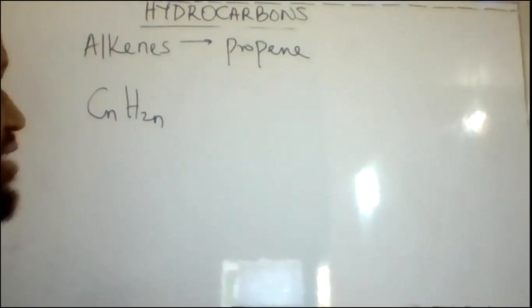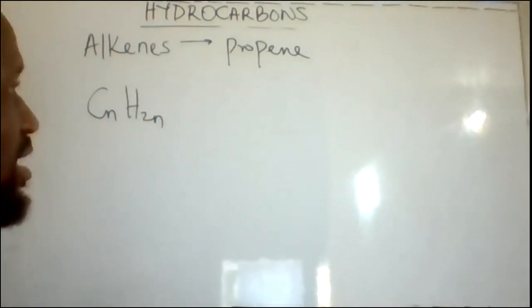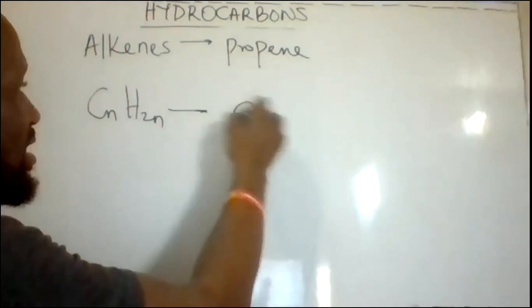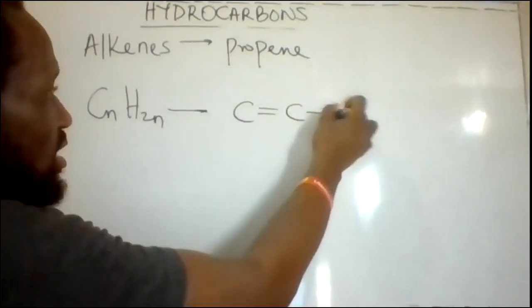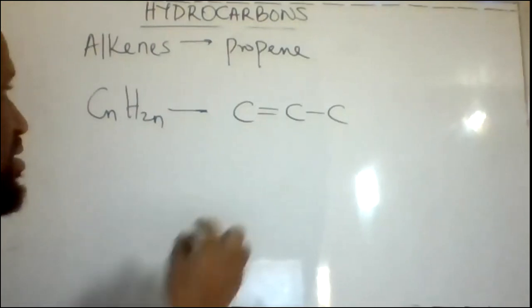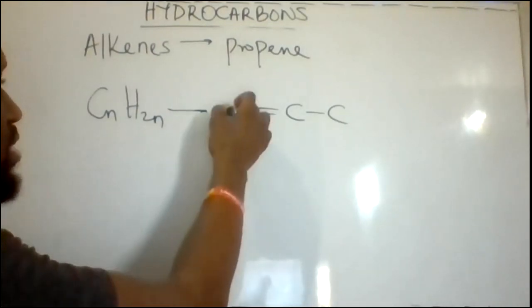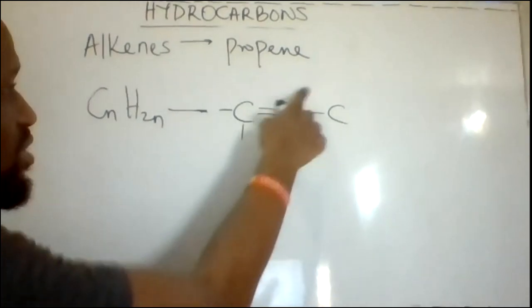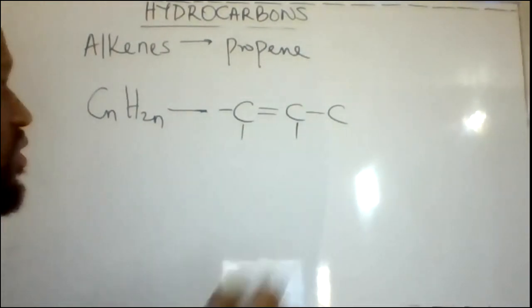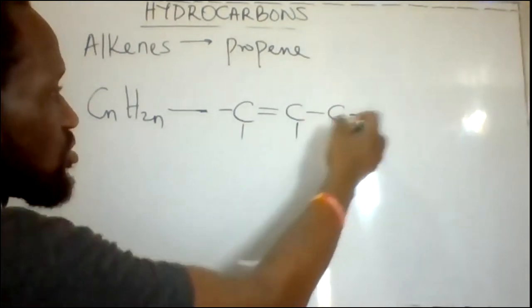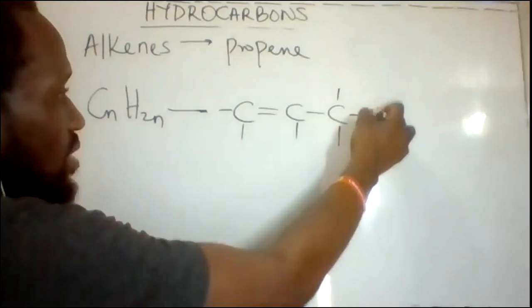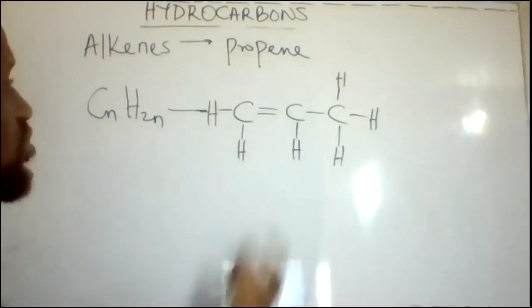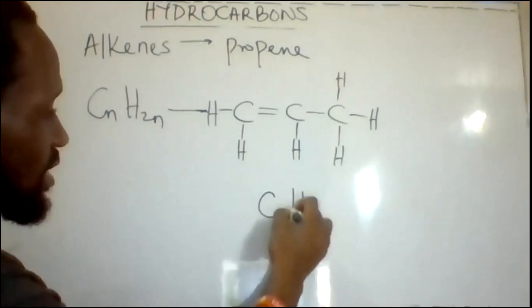The second member of the alkene series is propene. Since the first member has two carbon atoms, the second member has three carbon atoms with a single double bond. The double bond comes on the first carbon atom. The first carbon has two bonds already, so it needs two more to make four. The second carbon has three bonds, so it needs one more. The last carbon has just one bond, so it takes three extra. Filling the bonds with hydrogen atoms gives the structure of propene, C3H6, with six hydrogen atoms across three carbon atoms.